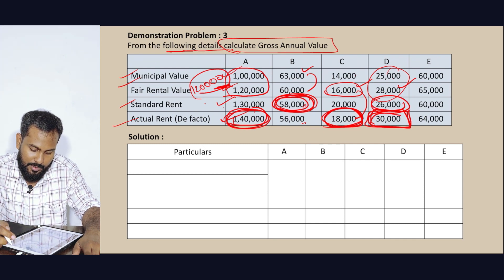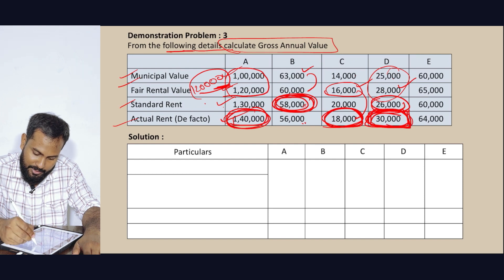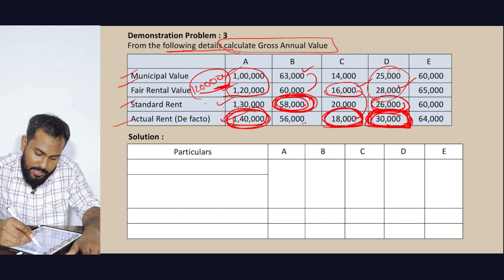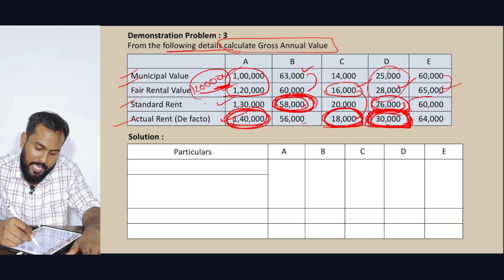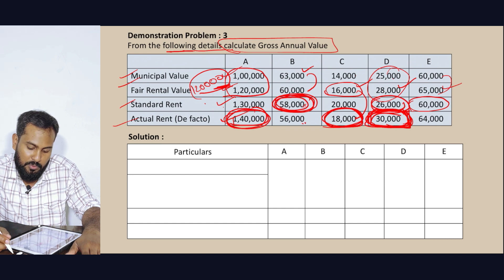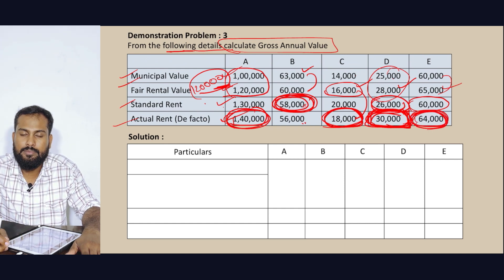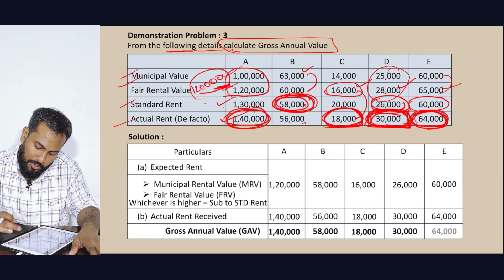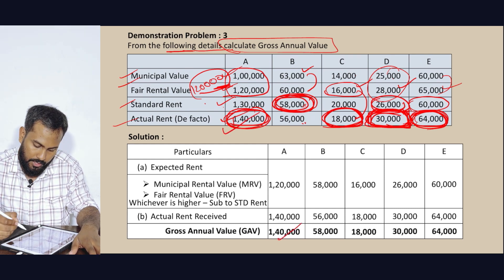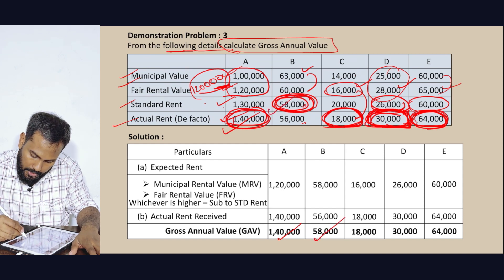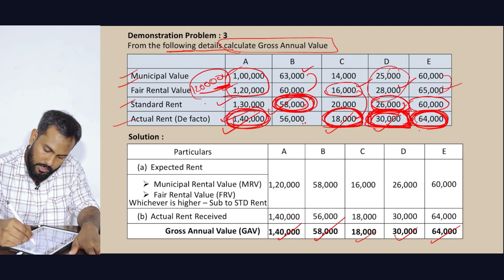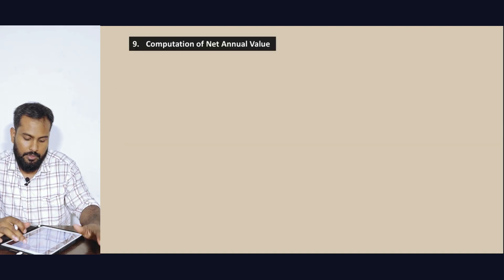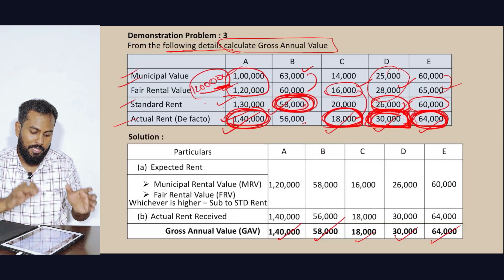Good answer. That means 18,000 is the answer. 60,000 and 65,000 — whichever is higher: 65,000. Standard and Expected: 65,000. Actual value: 64,000 — whichever is higher: 64,000. That is the Gross Annual Value. Final answers: 1,40,000 — 58,000 — 18,000 — 30,000 — 64,000. That's all.